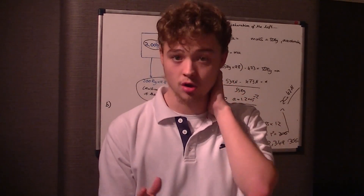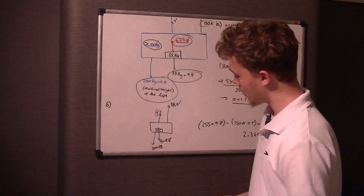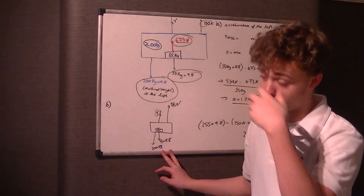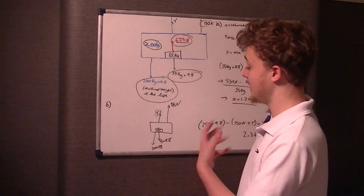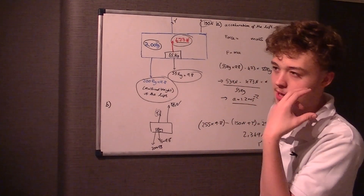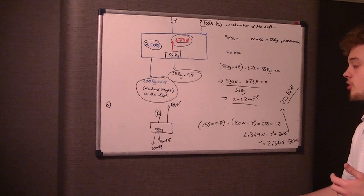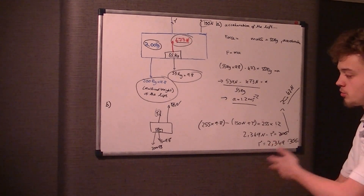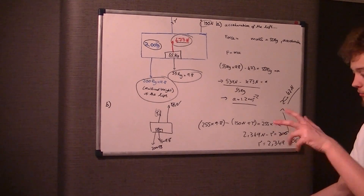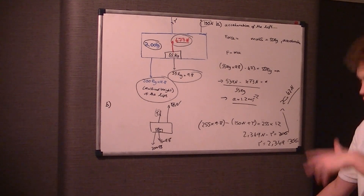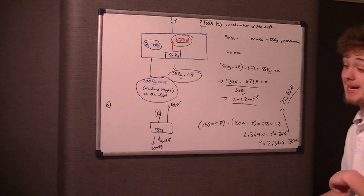We know the lift is moving down, not at a constant velocity, so obviously there's a bigger force pulling it down than pulling it up. We can't say the weight equals the force pulling up because that would mean constant velocity or stationary. We know the acceleration is 1.2 metres per second squared, so we use F equals ma — resultant force being force down take away force up, because it's moving down so the force down must be greater.